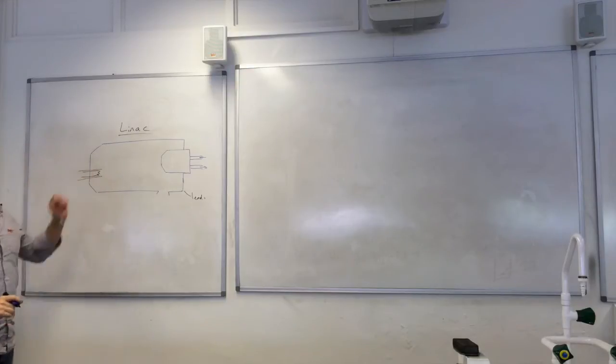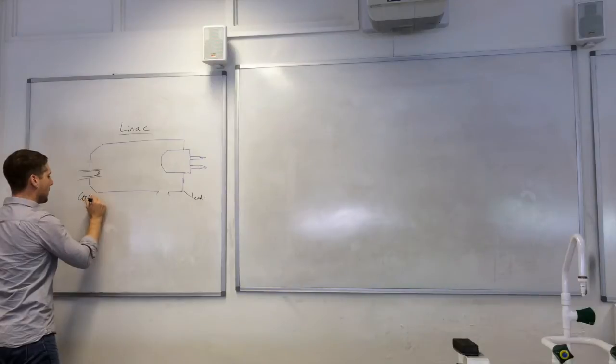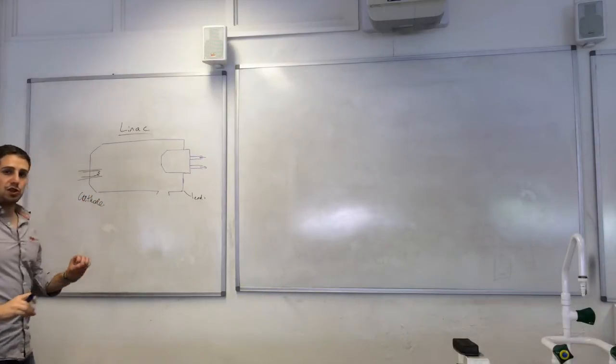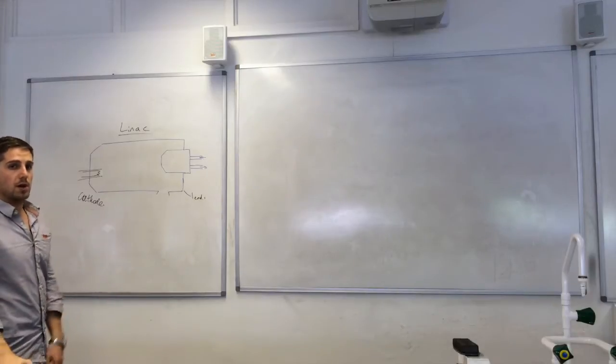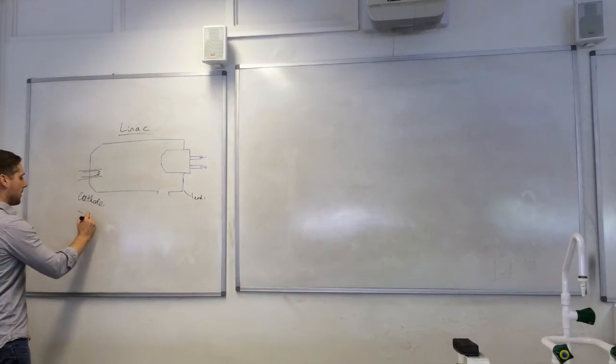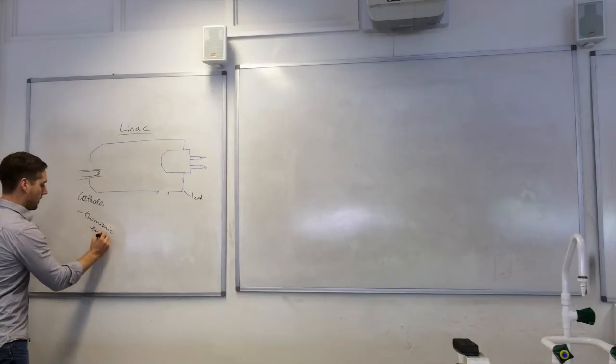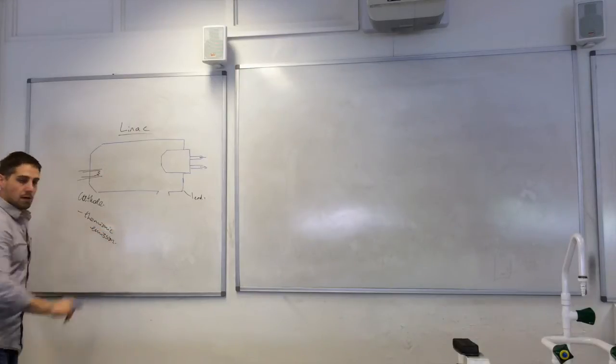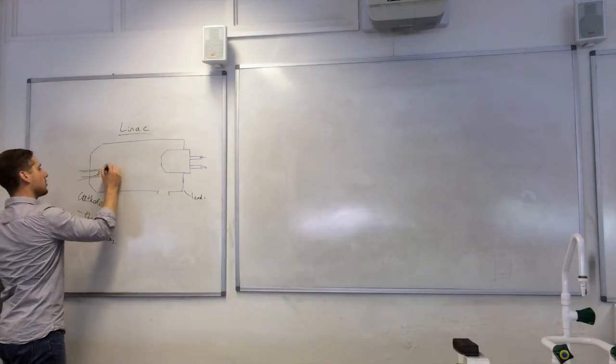And what this does, this cathode, is produce electrons by a process called thermionic emission. Thermionic emission takes place here. That produces our electrons.